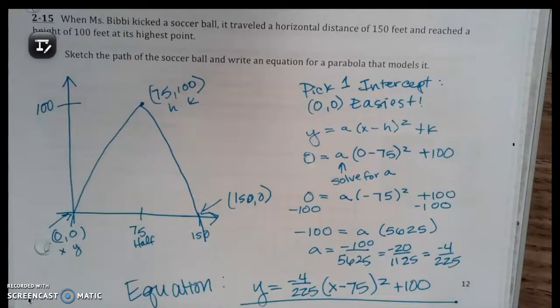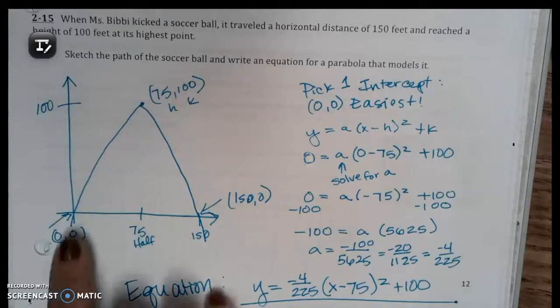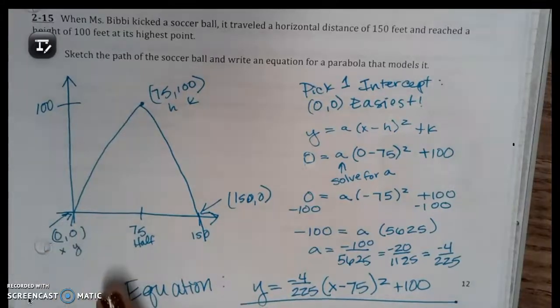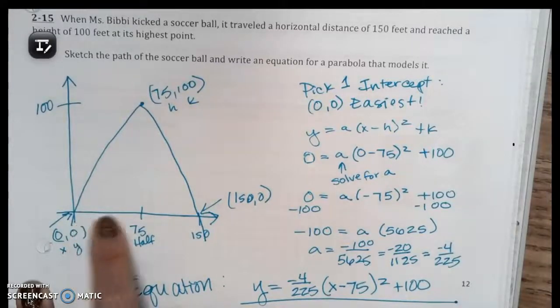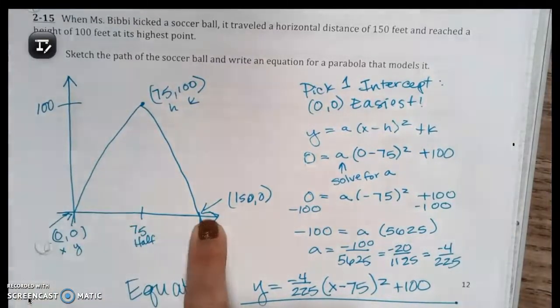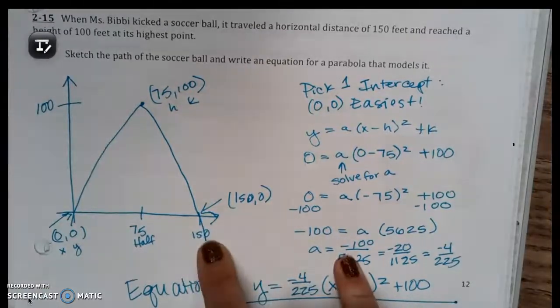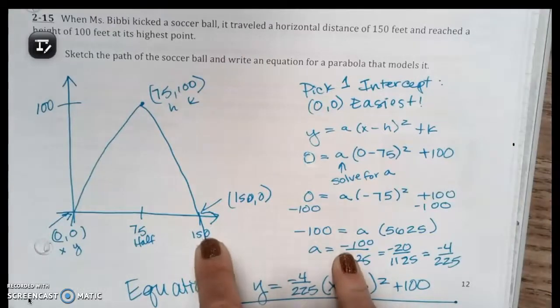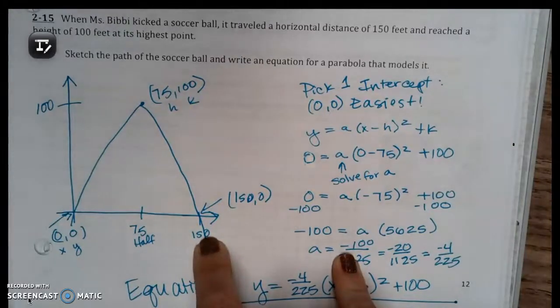And reached a height of 100 feet at its highest point. Sketch the path of the soccer ball and write an equation for a parabola that models it. So I started at (0,0) and the total distance this direction, horizontal distance, was 150 feet. And if it was kicked in a perfect parabola, right, it's going to be symmetrical.